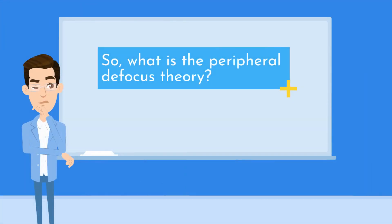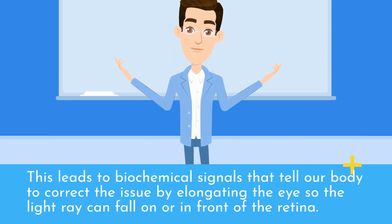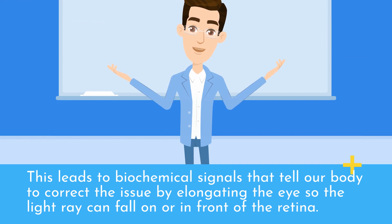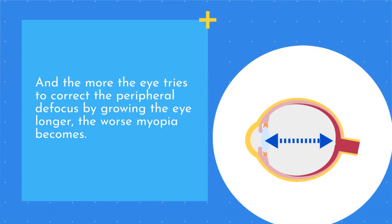So, what is the peripheral defocus theory? The peripheral defocus theory suggests that in myopic eyes, the light rays enter the eye and fall behind the retina, instead of on the retina, in the periphery area. This leads to biochemical signals that tell our body to correct the issue by elongating the eye so the light ray can fall on or in front of the retina. And the more the eye tries to correct the peripheral defocus by growing the eye longer, the worse myopia becomes.